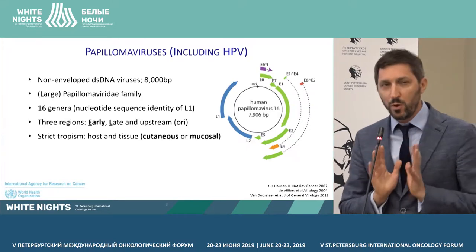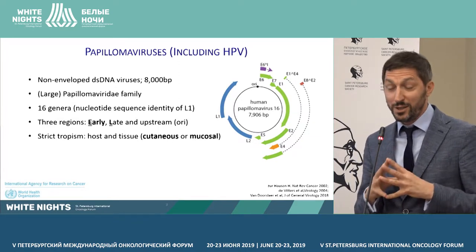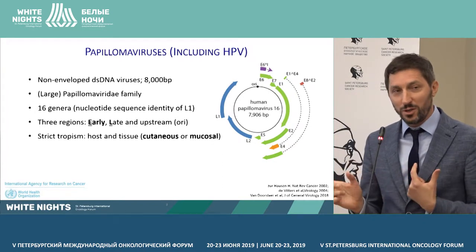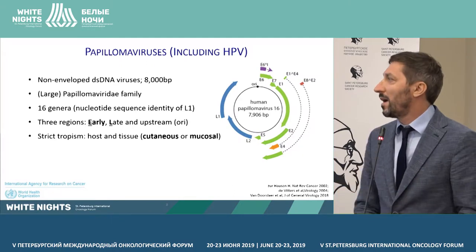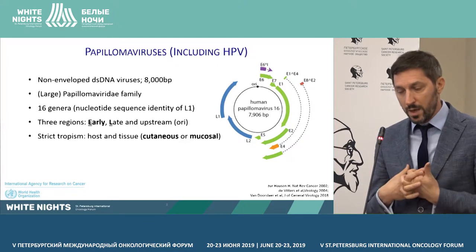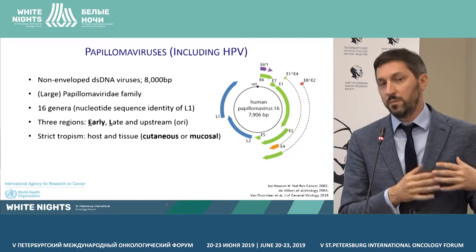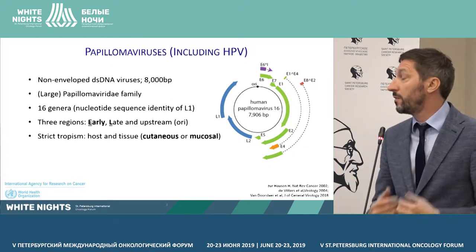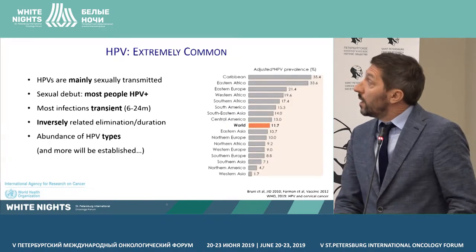What is important here is that the papillomavirus has very strict tropism to the host and to the tissues. As a rule, we do not see crossing between different types — people and animals. The tropism is also associated with the following: this virus can damage mucous tissues and skin — the cutaneous groups.